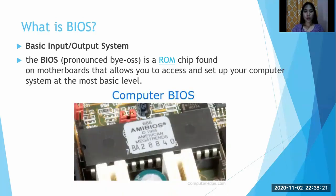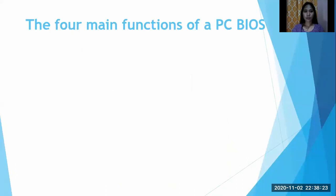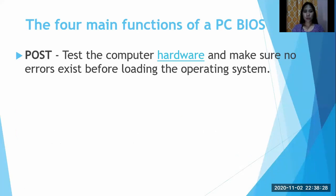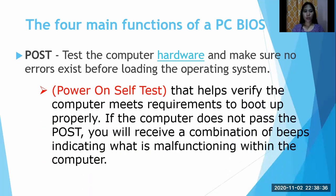This is what the BIOS looks like. The four main functions of a PC BIOS include the POST — to test the computer hardware and make sure no errors exist before loading the operating system. The POST, or power-on self-test, helps verify the computer meets requirements to boot up properly. If the computer doesn't pass the POST, you will receive a combination of beeps indicating what is malfunctioning within the computer.